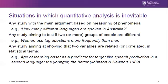If your study has its main argument based on the counting of things — for example, words or occurrences of something — by definition you will need to employ a quantitative approach to research. So if you are interested in investigating linguistic diversity in Australia, essentially your research question is how many different languages are spoken in Australia, and therefore to answer your question, you would need to present your data numerically.